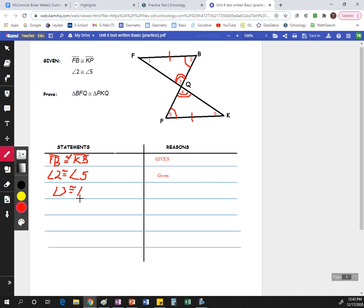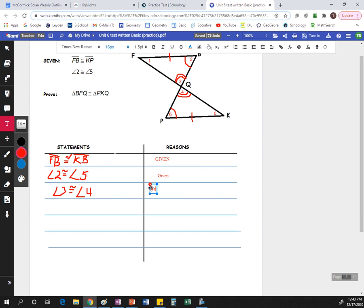And the reason for that is vertical angles. And you can abbreviate that just vert. I'm going to write out vertical angles, but vert would be just fine.